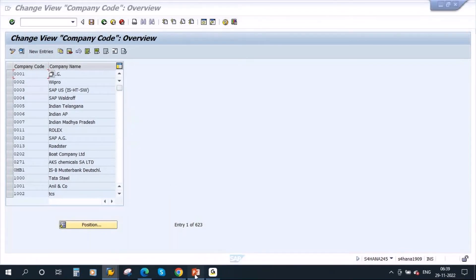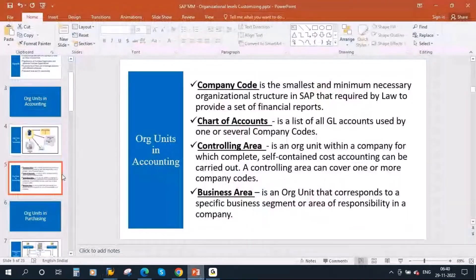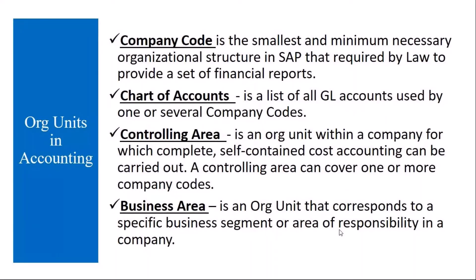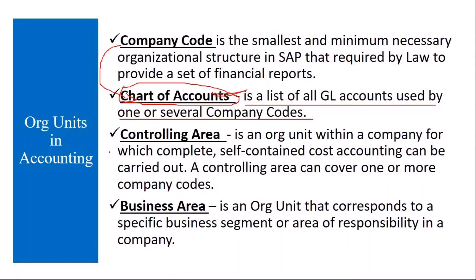The next one is chart of accounts. Chart of accounts is a list of all GL accounts used by one or several company codes. We discussed this to some extent during our automatic account determination sessions. The chart of accounts is created by FI and the company code is assigned to it.